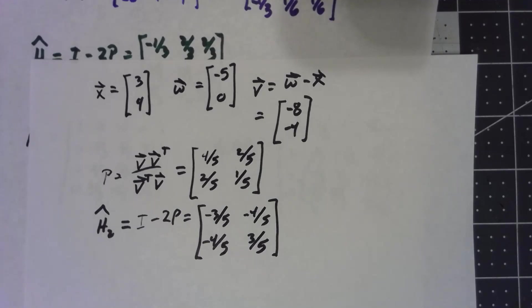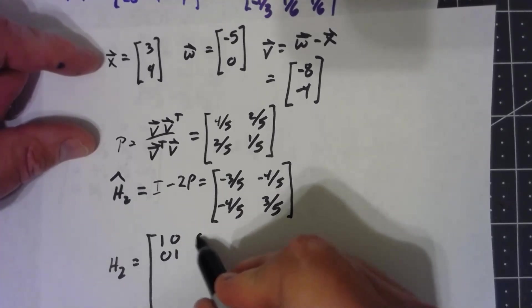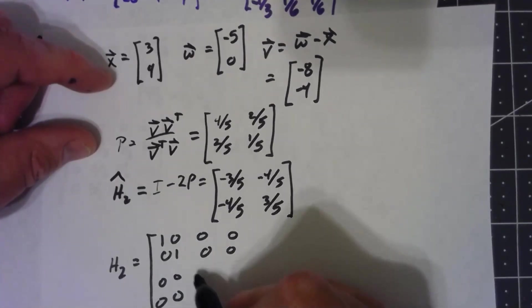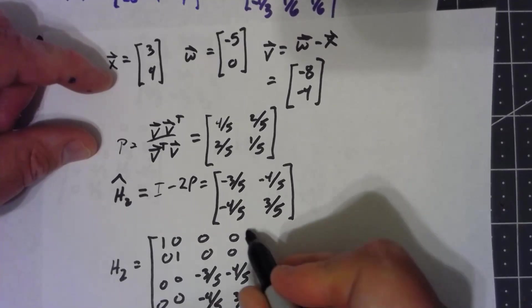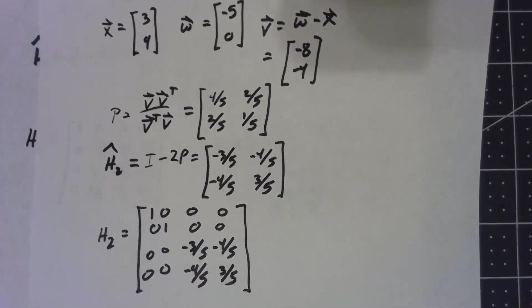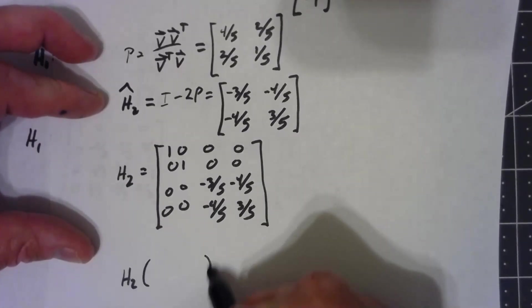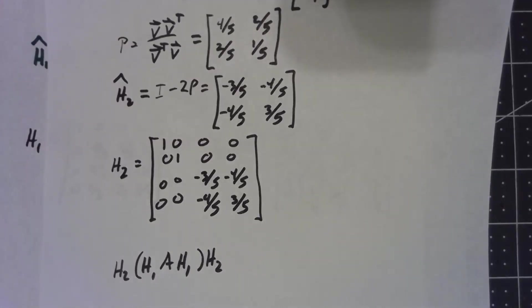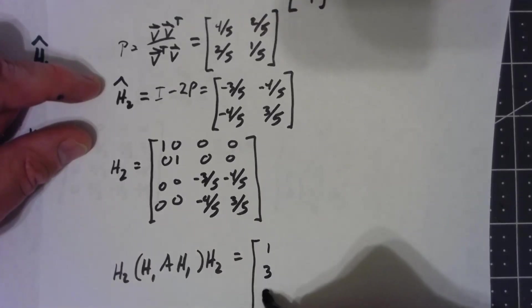But again, this is 2 by 2. I need a 4 by 4 matrix to do the whole thing. I'm going to put a 2 by 2 identity up here, fill it out with zeros in that row and column. And then this comes down and is the bottom 2 by 2. Now, it's important to realize I'm doing this not to the original A matrix, but to the one we did the reflectors on before. So what I'm really doing, I'm doing H2 left and right to H1 A H1.